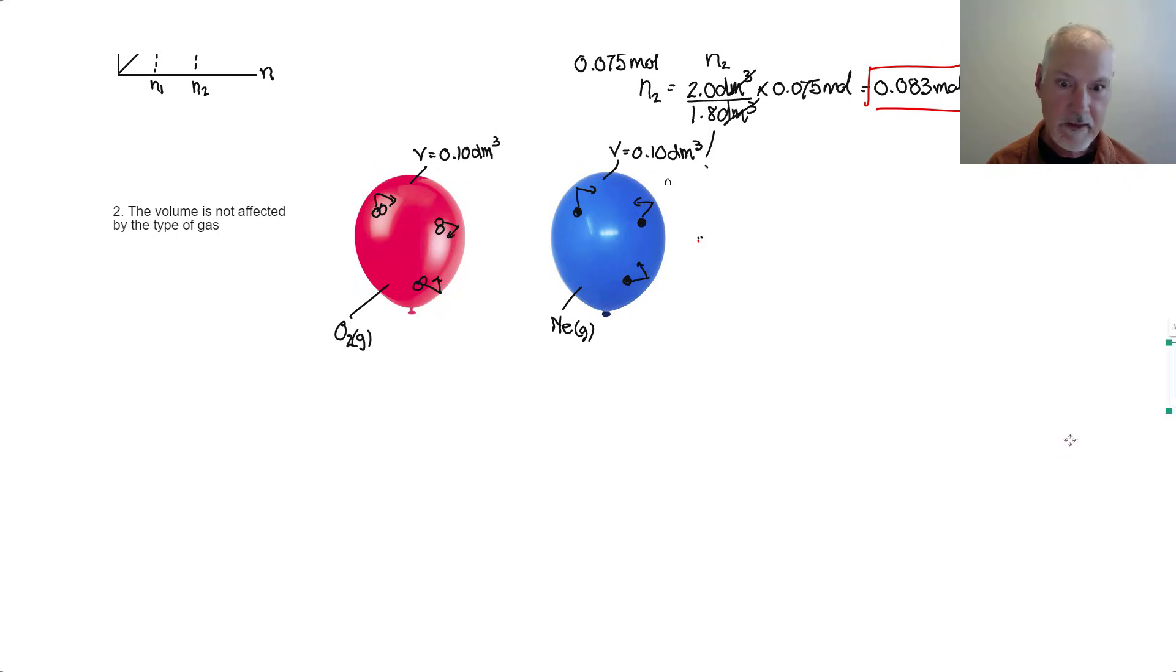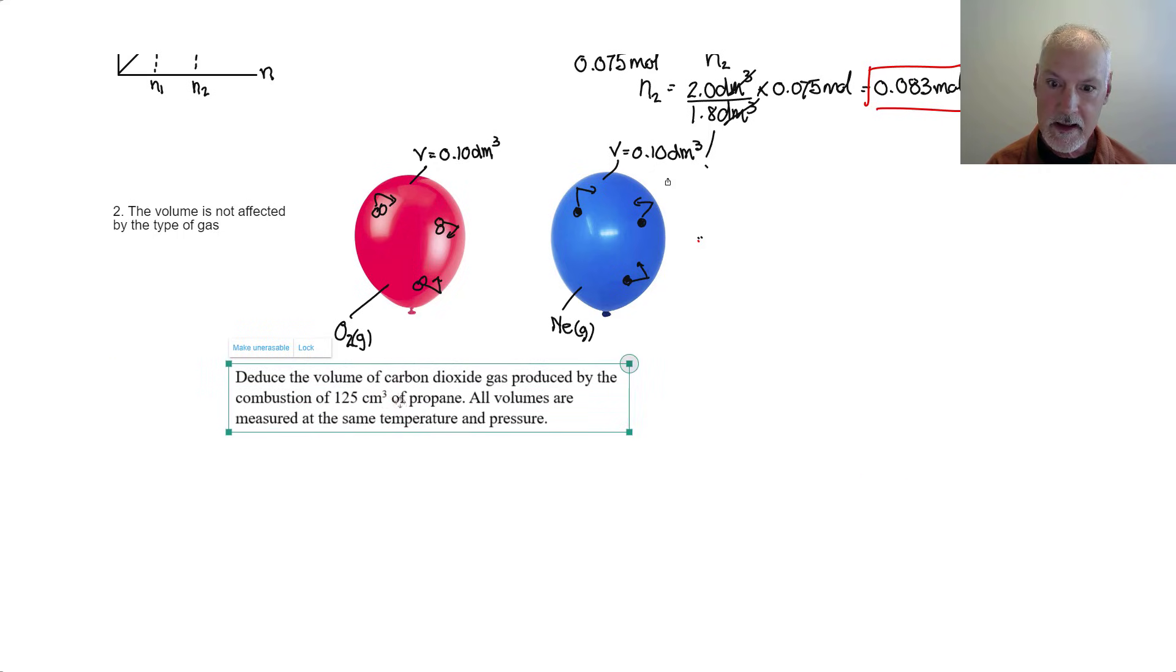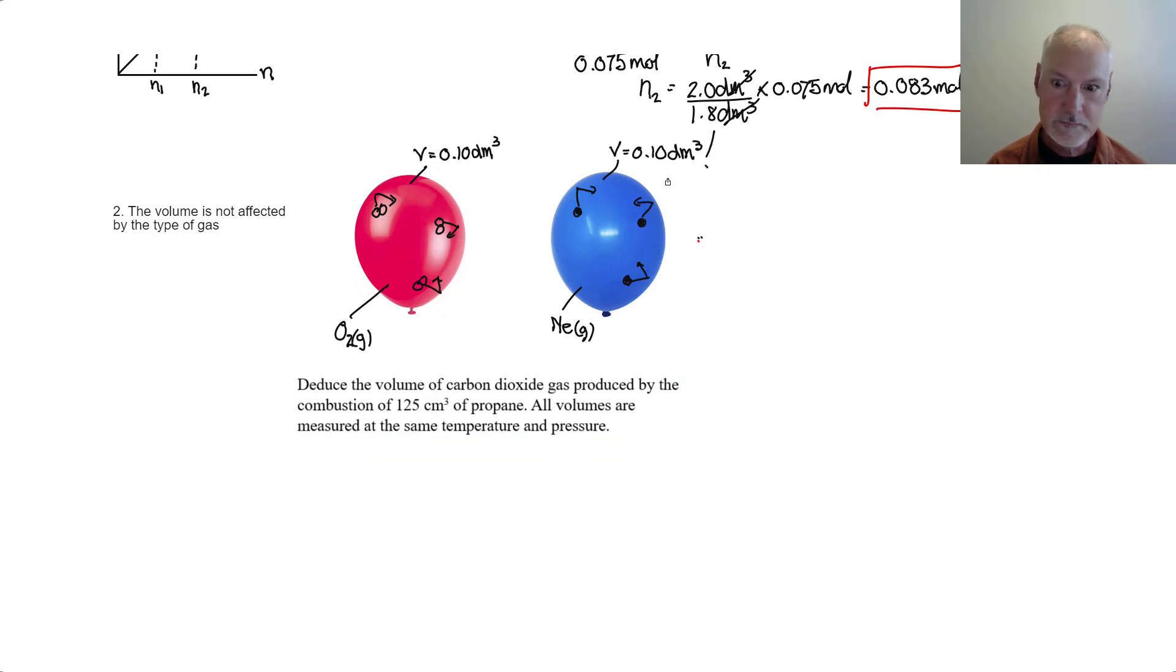Let's take this idea now and apply it to this question. Deduce the volume of carbon dioxide gas produced by the combustion of 125 cubic centimeters of propane. So propane is C3H8 and it's a gas. And combustion means we're going to combine it with oxygen gas, and that will produce our carbon dioxide gas and water vapor.